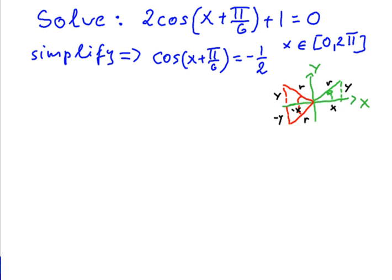All right, so 2 cosine x plus pi over 6 plus 1 is equal to 0. Another linear type of equation. So the domain is given, x is from the interval 0 to 2 pi.